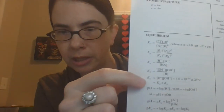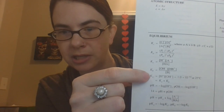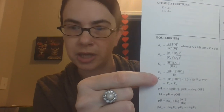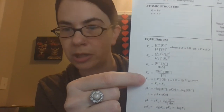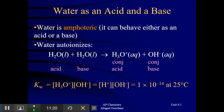The equation sheet says Kw equals [H+][OH-], and you can see the value is given right there. This equilibrium expression is going to become very useful to us later on today.